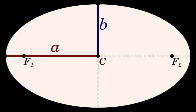Now consider the equation in polar coordinates, with one focus at the origin and the other on the θ = π direction: r(1 + e·cos θ) = l.